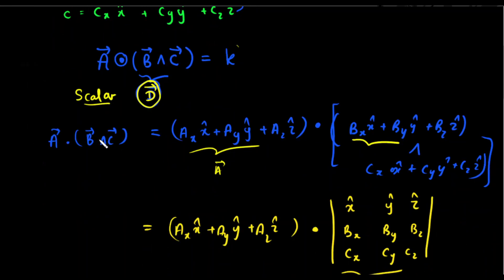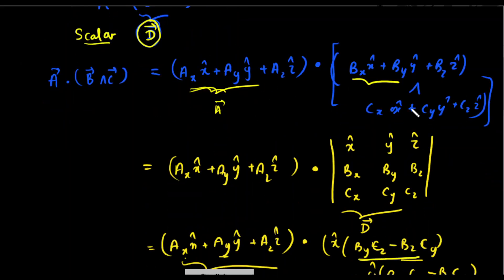I have vector A written as AX x-hat + AY y-hat + AZ z-hat. I'm going to take the dot product with B cross C. To find B cross C, I write it in matrix determinant format, with x-hat, y-hat, z-hat in the top row, the components of B in the middle row, and C in the bottom row.